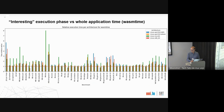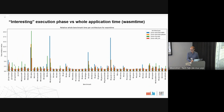Q: Does the interesting part include application running code that does its own initialization? A: No, that's excluded. These are microbenchmarks that typically do some kind of setup — initializing data and similar things — which is not really interesting to measure. That's the difference between the two graphs. We annotated the source code and the runtimes to achieve this.